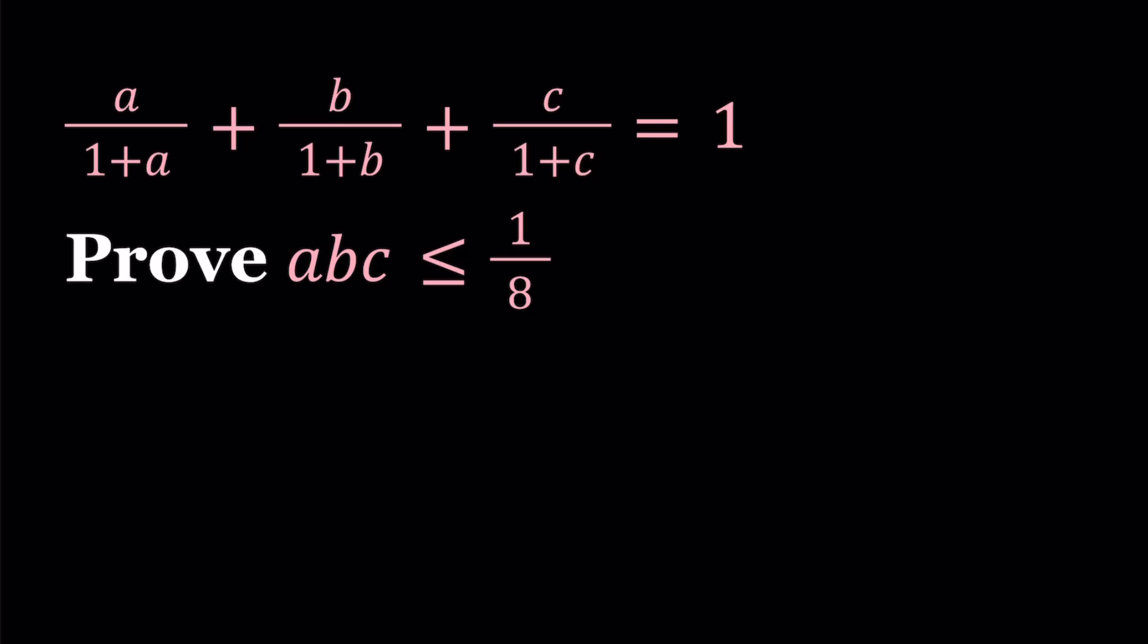So we have a over 1 plus a plus b over 1 plus b plus c over 1 plus c equals 1. And we are supposed to prove that the product abc is less than or equal to 1/8. In this case, abc are all positive. They're greater than 0.